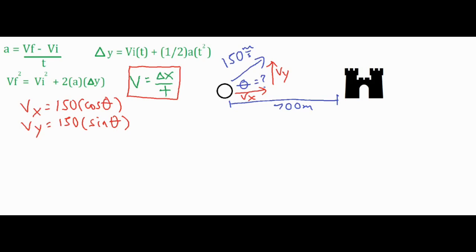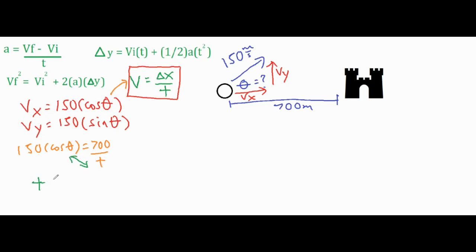We plug 150 cosine of theta in for velocity, giving us 150 times the cosine of theta equals delta x over t. Since delta x is 700 meters, we get 150 cosine theta equals 700 over t. Cross-multiplying lets us solve for t in terms of theta.